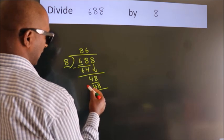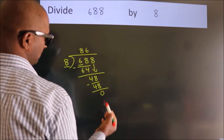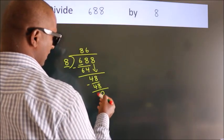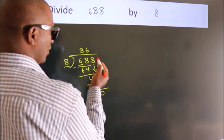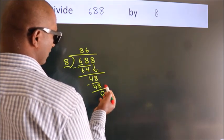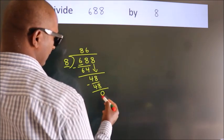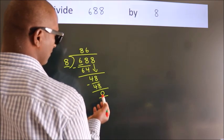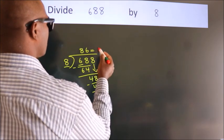Now we subtract, we get 0. After this, no more numbers to bring down, and we got remainder 0. So this is our quotient.